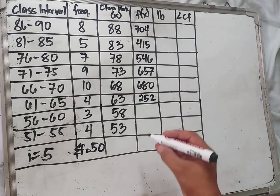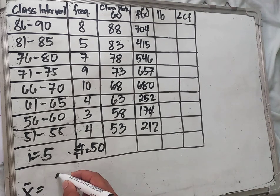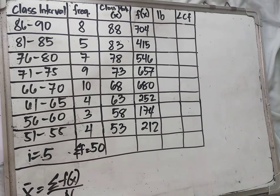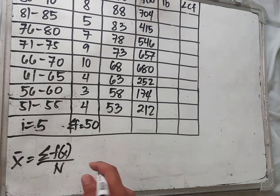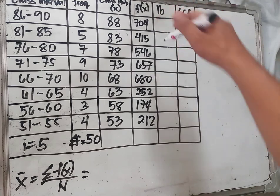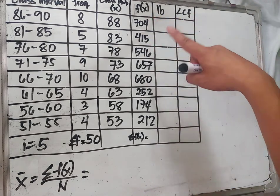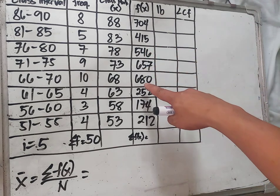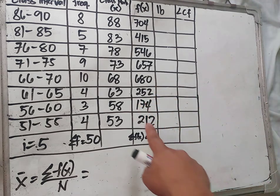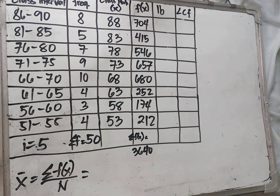Then 3 times 58 equals 174. Then 4 times 53 equals 212. Based on the formula, x-bar equals summation of fx over n. The total summation of fx is: 704 + 415 + 546 + 657 + 680 + 252 + 174 + 215, which equals 3640.